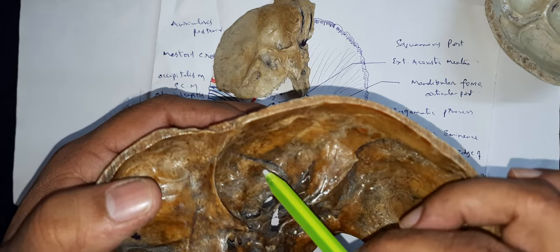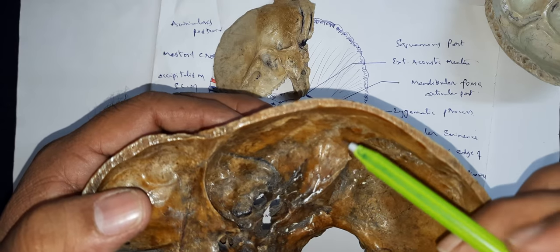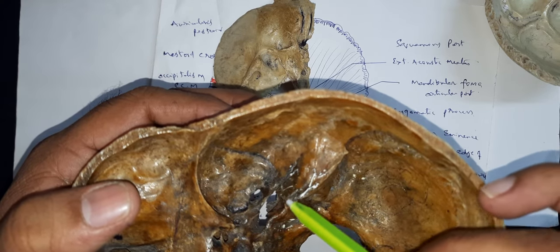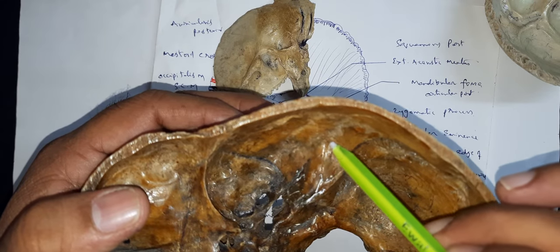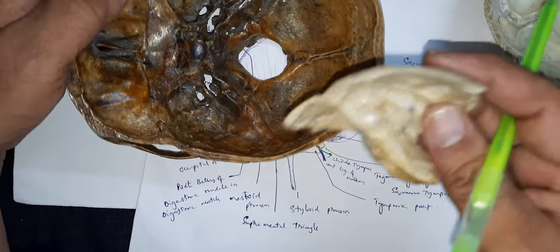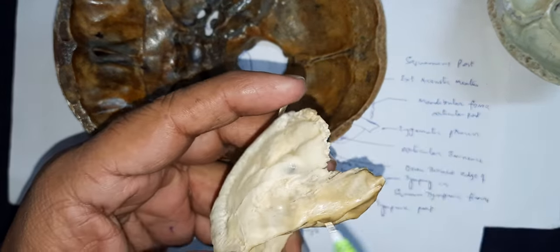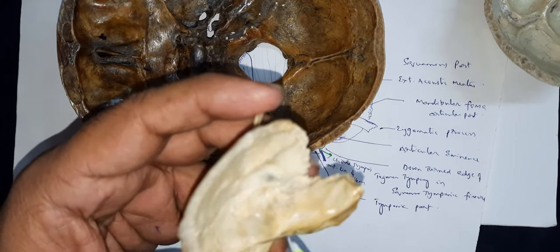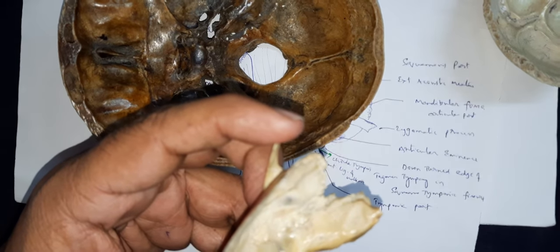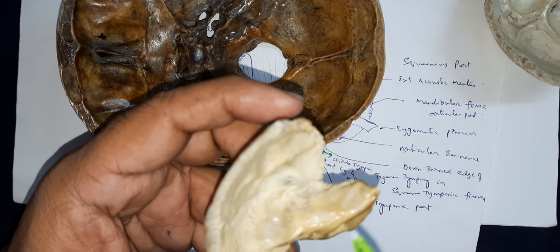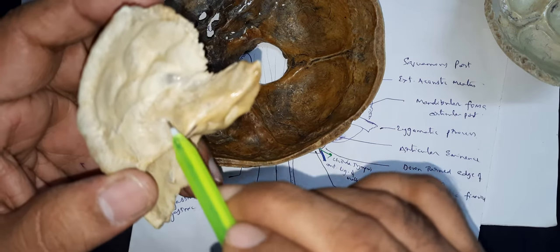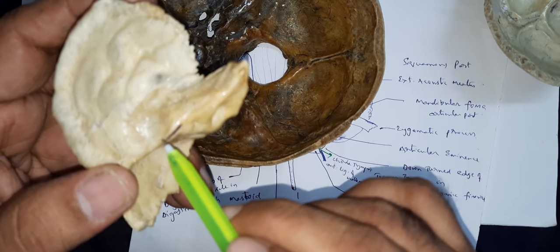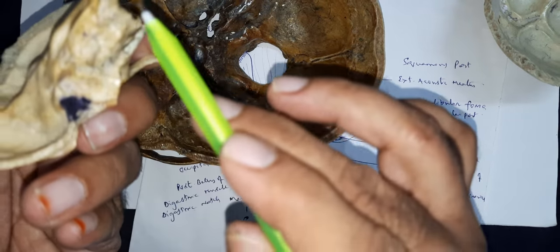Now we go inside. This is the inside part of the bone — this is the petrous part of the temporal bone, which is a triangular-shaped thick part. It presents a superior border, an inferior border, an anterior border, an anterior surface, a posterior surface, and an inferior surface.